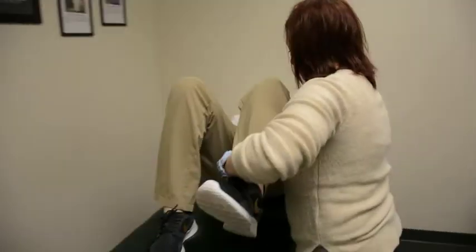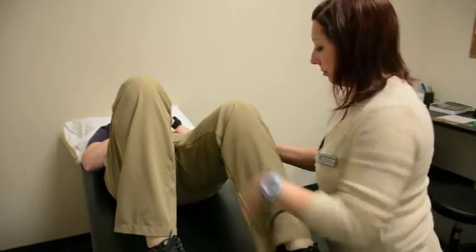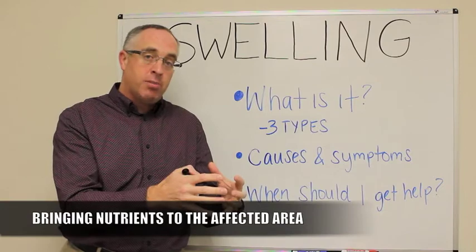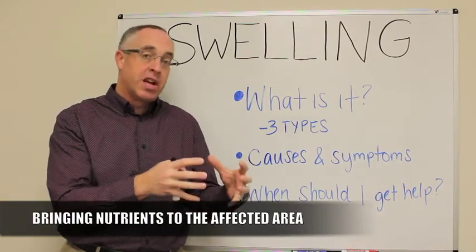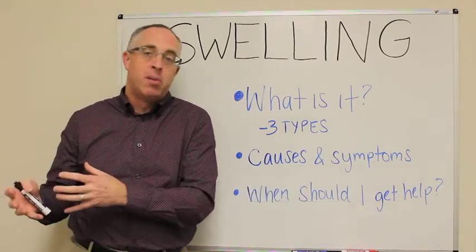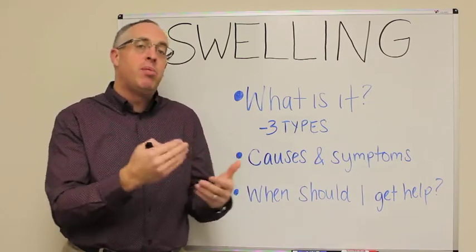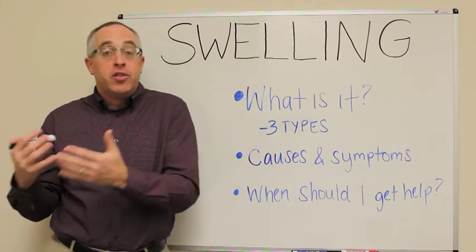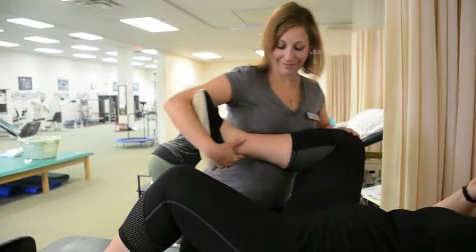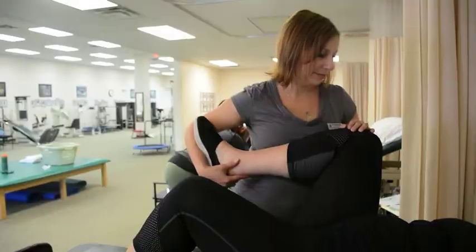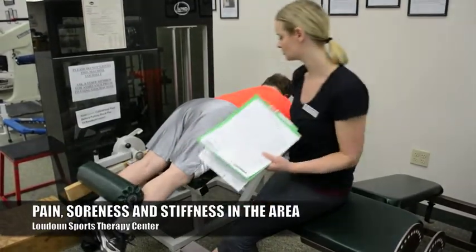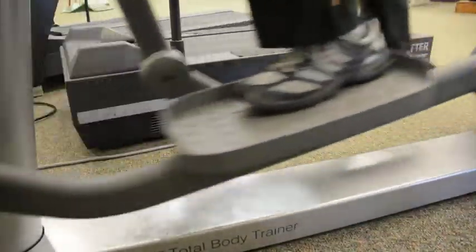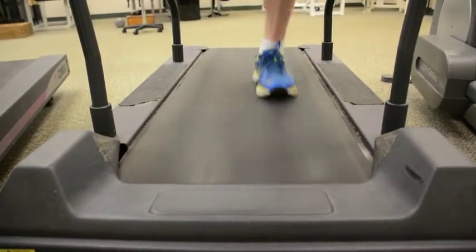Swelling is the body's natural response to help with injury or irritation. It brings in nutrients to lock up the area and make it tighter, thickening the tissue to protect it from further injury — so an ankle sprain doesn't become a broken bone or a tissue tear. It also initiates a clotting mechanism to start the healing process. Signs of inflammation and swelling include pain, soreness, and stiffness in the area — these are appropriate responses that tell you to use the area more gingerly.